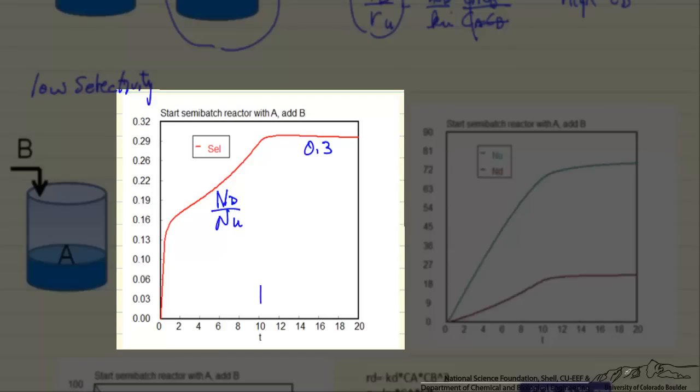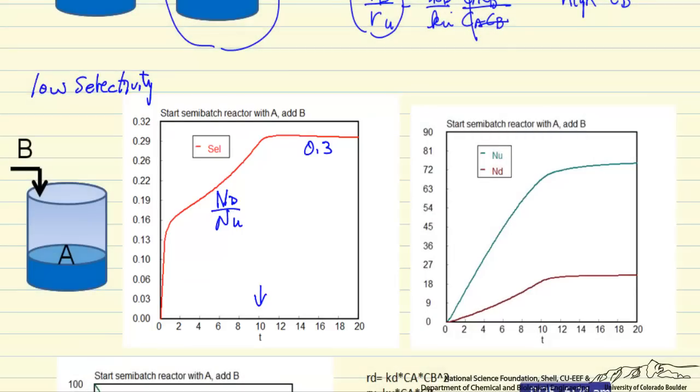The numbers I've set up for this system used dimensionless units. The time of 10 is where we stop adding B because we've added enough B that the number of moles of A and the number of moles of B added to the system are the same.